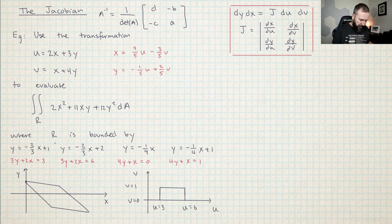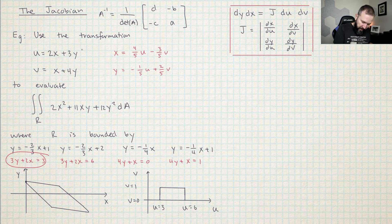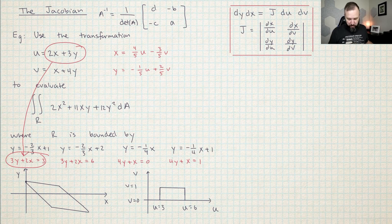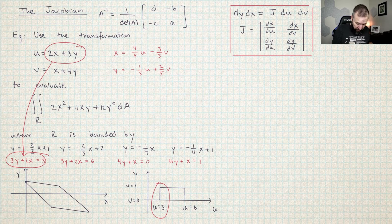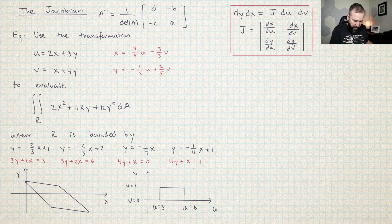Transforming the region turned out to be pretty easy. I took each boundary line and cleared the denominator — multiplied by three and moved terms over. So three Y plus two X equals three is exactly u, so one boundary becomes u equals 3. Similarly, three Y plus two X equals six becomes u equals 6. Then x plus four Y equals zero becomes v equals 0, and x plus four Y equals one becomes v equals 1. This problem has been constructed in a friendly way — it takes our ugly parallelogram-like region and turns it into a nice rectangular region.